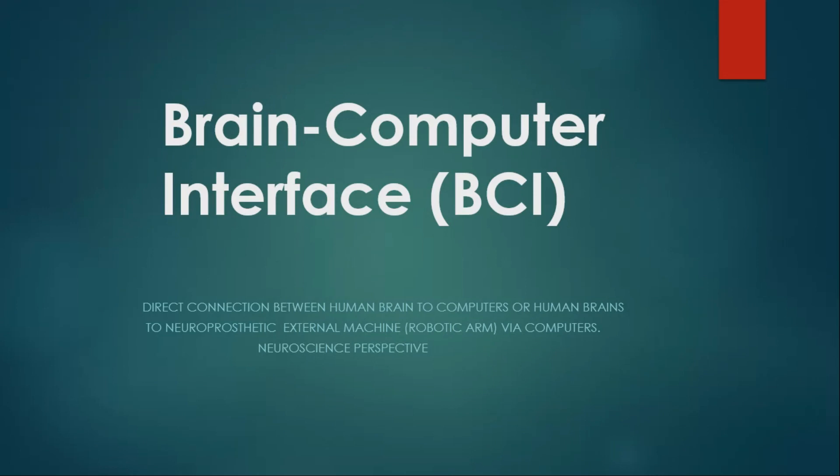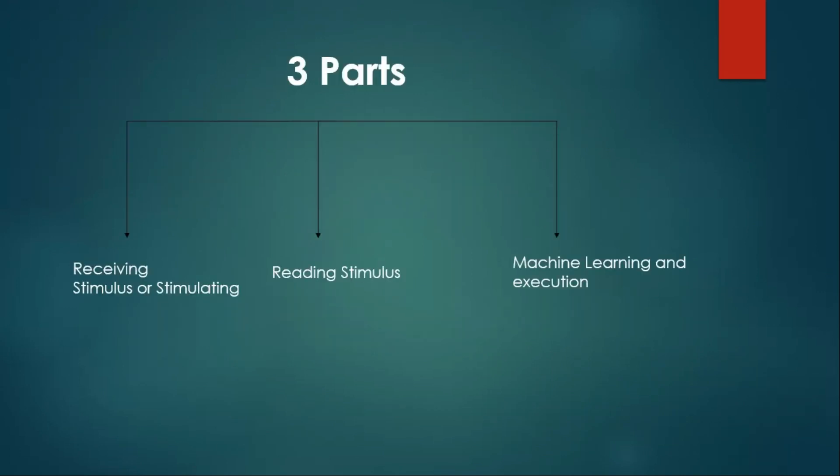We'll be explaining it from the neuroscience perspective. We won't get into the machine learning or AI perspective yet as it will be more complex. For now, we will only explain from the neuroscience perspective. BCIs have three components: the first one is receiving stimulus or stimulating, the second one is reading stimulus, and the last one is machine learning and execution.